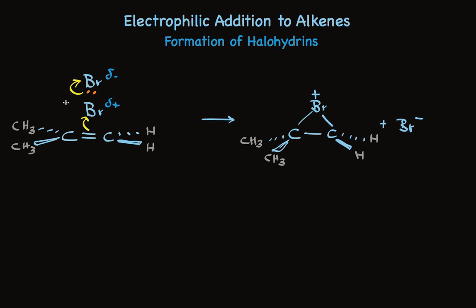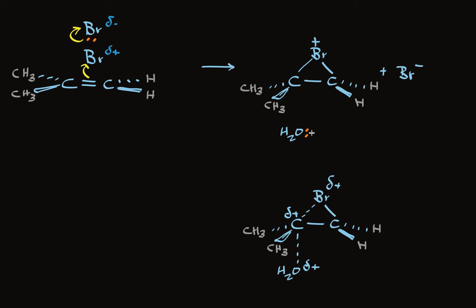When we make a halohydrin, in the second step water adds to this bromonium ion. Water, as a nucleophile, must approach from the bottom side because the bromine is already on the top side. But it could add to either the carbon with two alkyl groups or the carbon with none. To explain why water adds to the more substituted carbon, take a look at the two possible transition states. Water adds to the more substituted carbon because it has a partial positive charge — the bromine-carbon bond is already breaking, and the electrons on water are drawn to that partial positive charge.